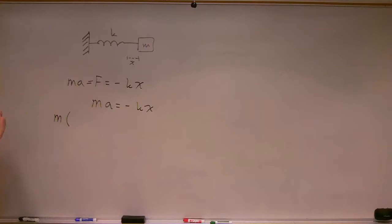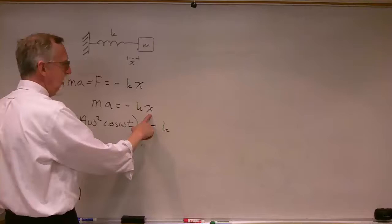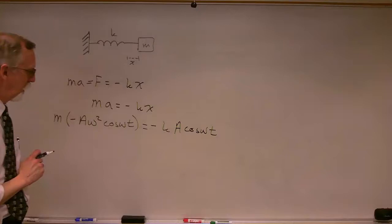We've got m times the acceleration. Remember, the acceleration was minus A omega squared cosine omega t, and this equals minus k times x. And remember, x was A cosine omega t.